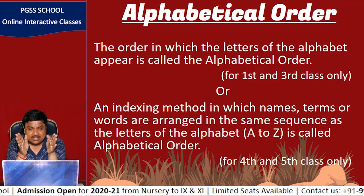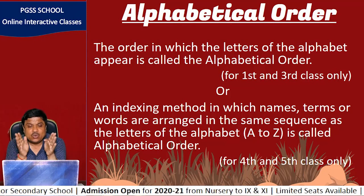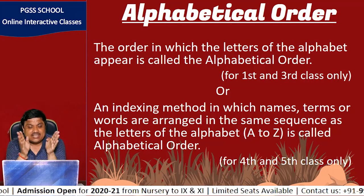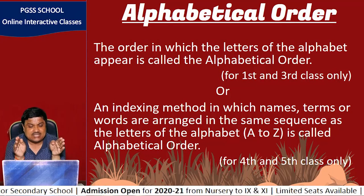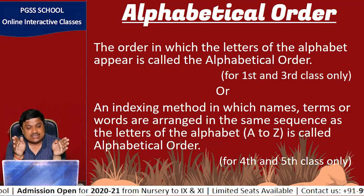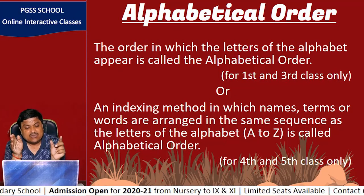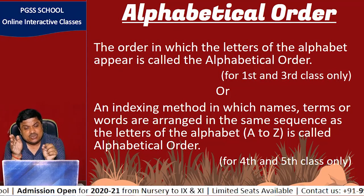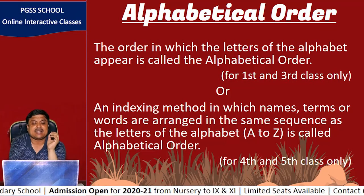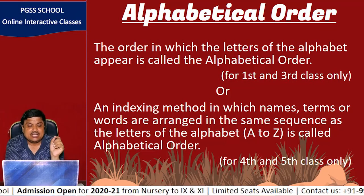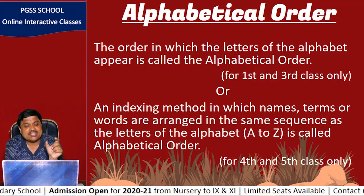The second definition: an indexing method in which names, terms, or words are arranged in the same sequence as the letters of the alphabet, A to Z, is called alphabetical order. This definition shows that alphabetical order means we have to focus on the alphabet A to Z to arrange words.